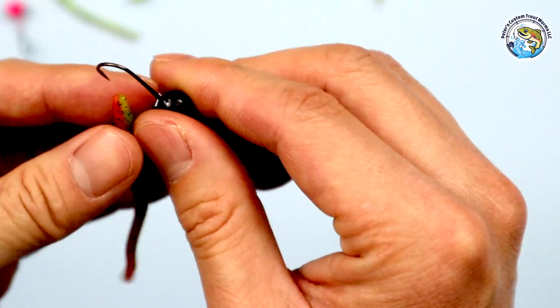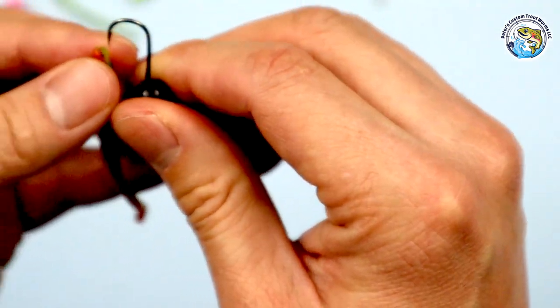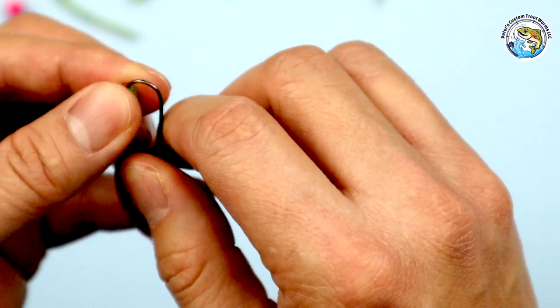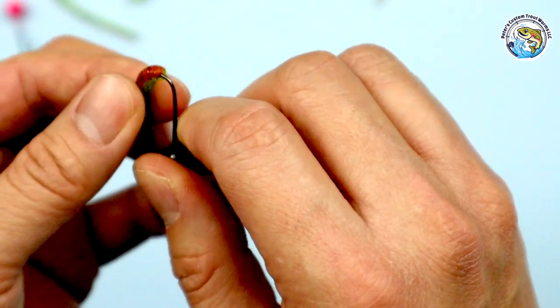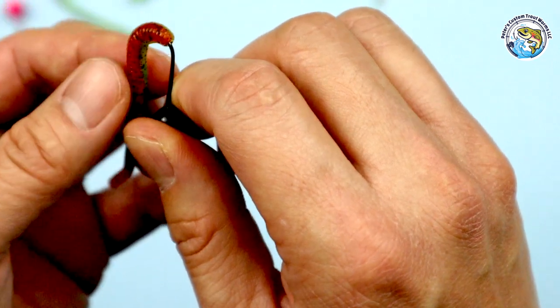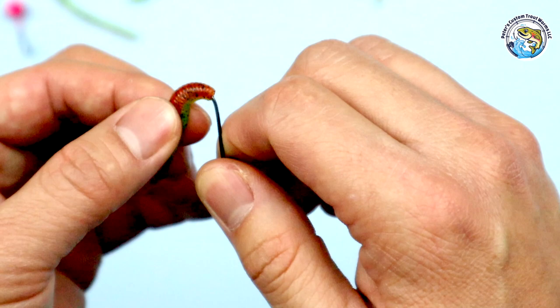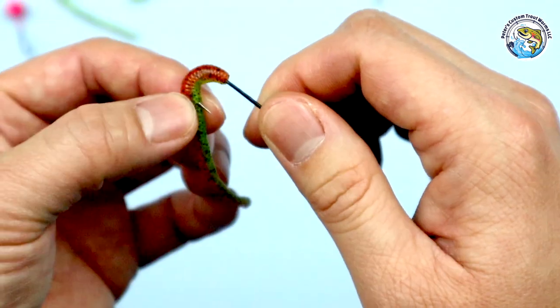All you got to do is thread your worm. Start with the hook point at the nose and go all the way down. Now the point of the hook should be sticking out where the mark was, right about there.